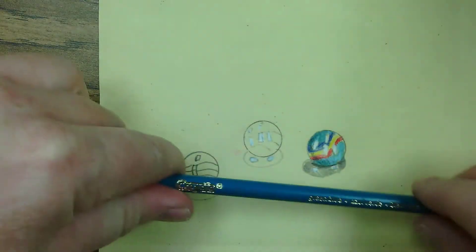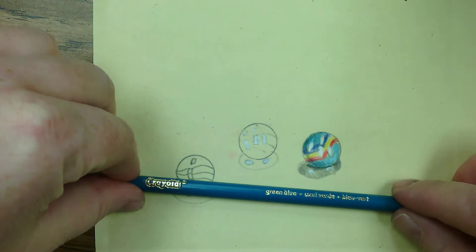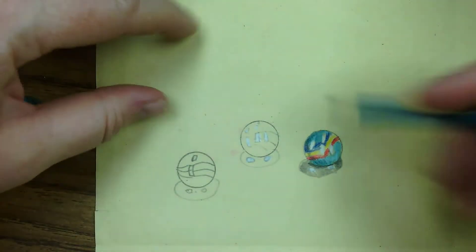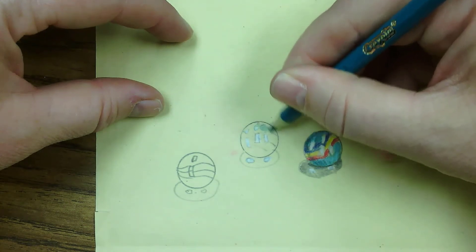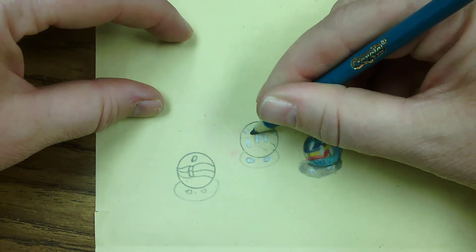Next we're going to color in the glass. You can use green blue, turquoise, light blue, any color like that. We are going to do this lightly with that blue, whatever blue you're using.